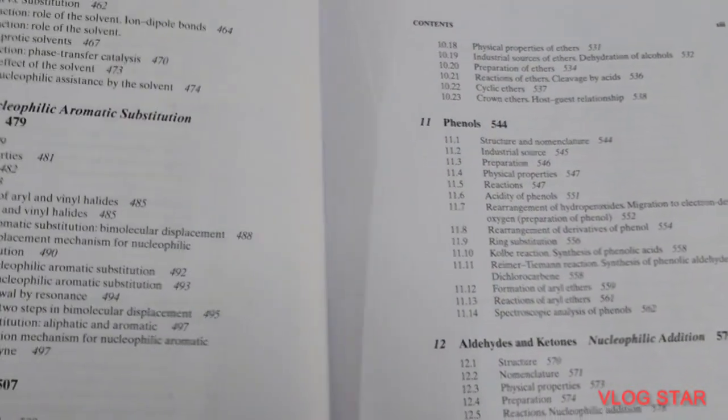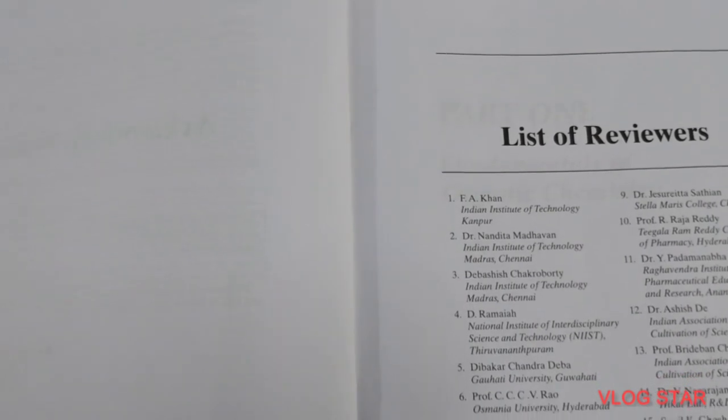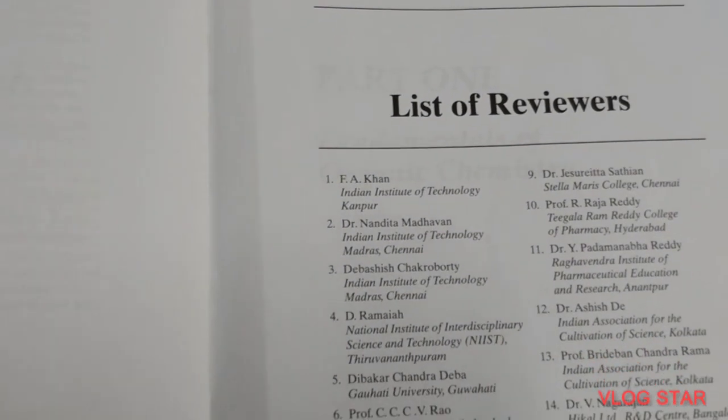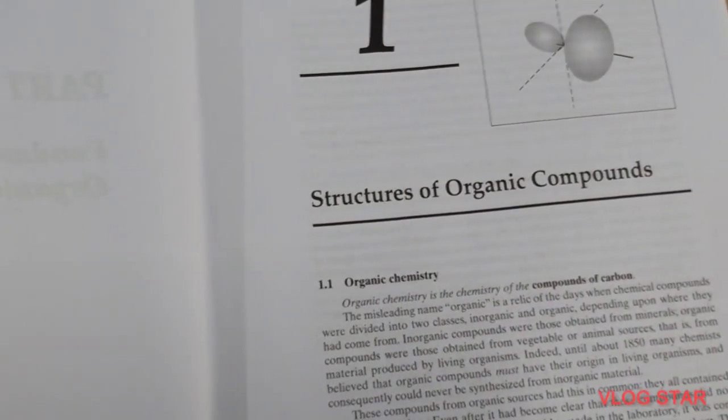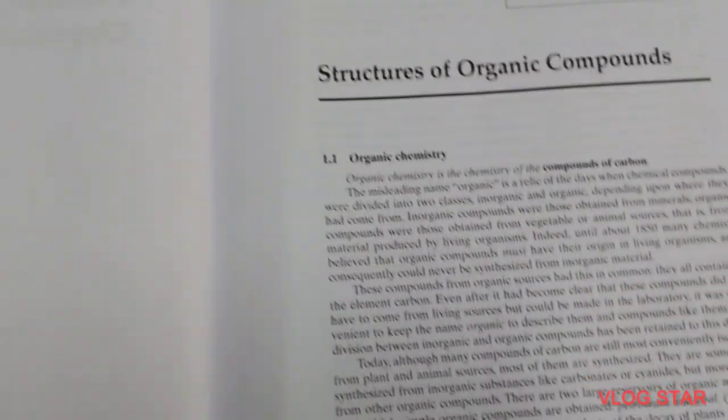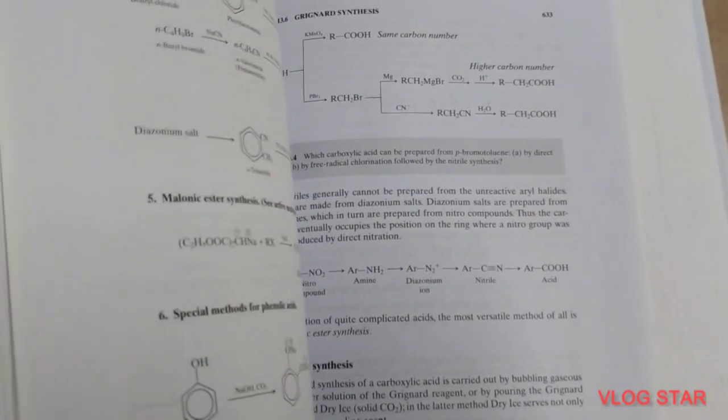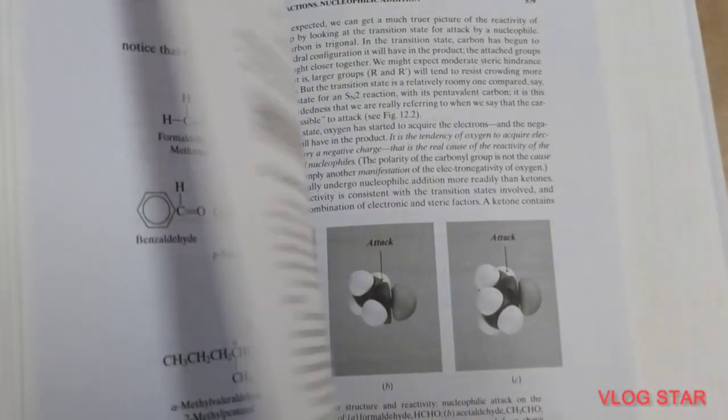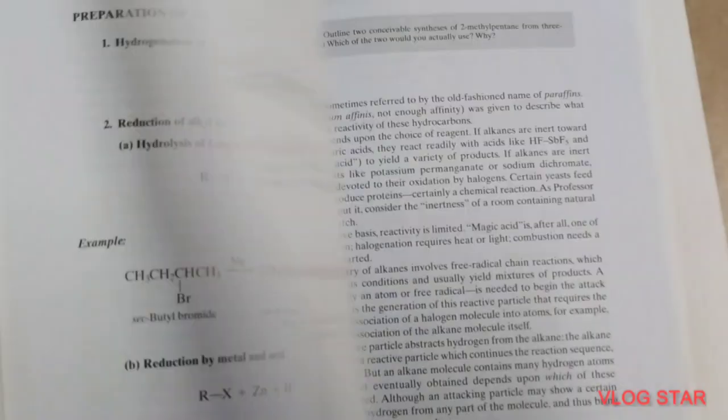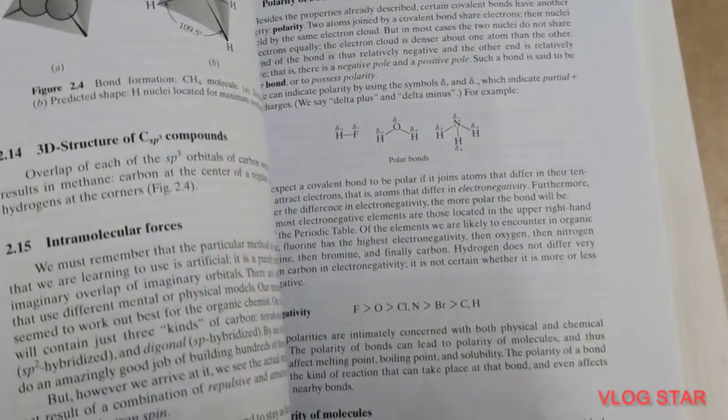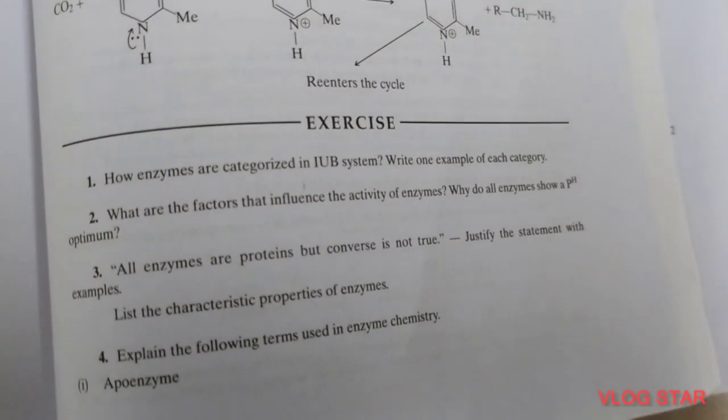Next we have part 2 which contains phenols, alcohols. Next we have the list of reviewers. Next we have the very first chapter. As you can see the chapter is quite vast because this book contains all the chapters in very detailed form. Bits and sub-bits are explained in detail form with the structures. As you can see the exercise has also been there.